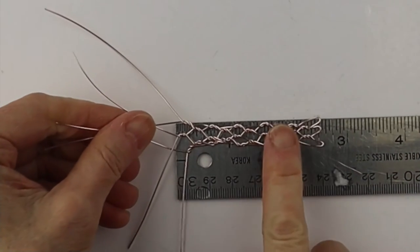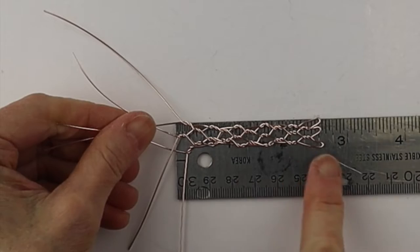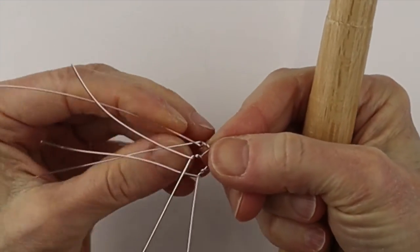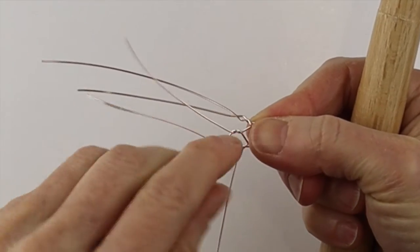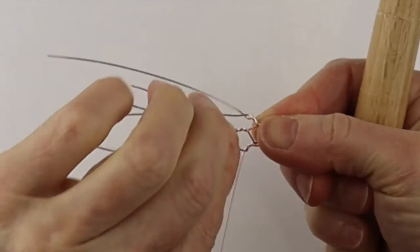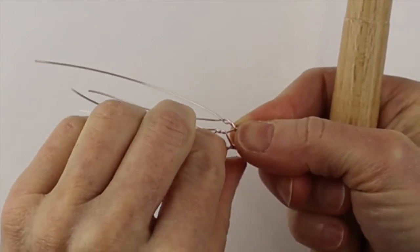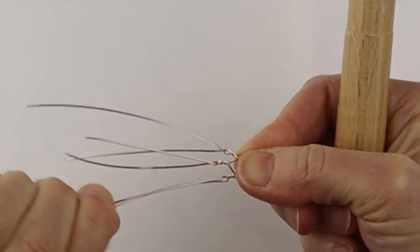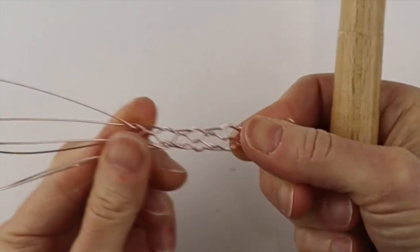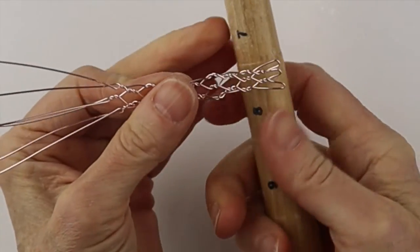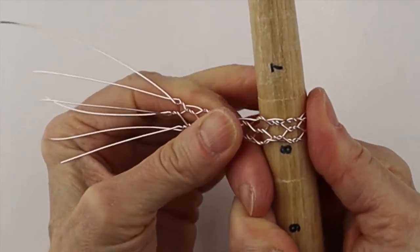So measure about two and three quarters inches, depends on how big your finger is. And then we're just going to straighten out some of these wires on the end, just pull them out. And that's our beginning part. And then put it on the ring mandrel.